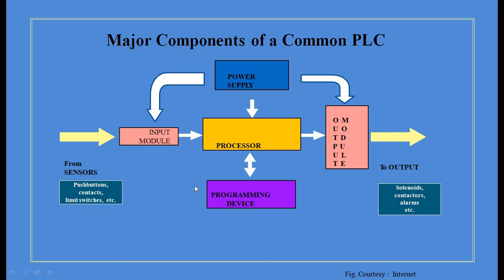Another important part is the programming device. We need a programming device in which we prepare our required program and give that program to the processor. The processor will have its own small memory. Most of the time, this programming device will be a personal computer. Through the computer we prepare a program for the PLC, which is sent to the processor. Once the processor goes into run mode, it starts running the program according to the inputs and outputs.